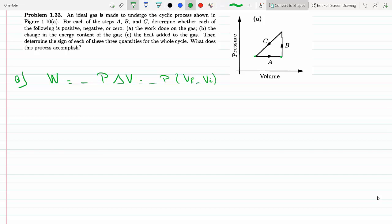So, if we look at process A, or step A, V final... the gas is undergoing expansion because V final is greater than V initial, which makes this positive, which in turn makes work negative. So, in process A, work is less than zero.